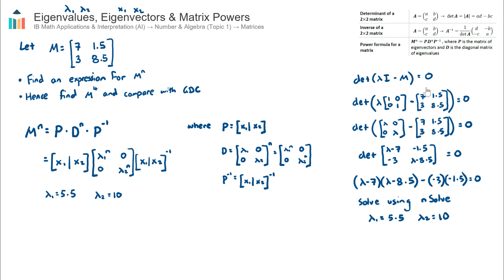The two eigenvalues could also be found by hand using the characteristic equation: the determinant of lambda times the identity matrix minus M equals zero. Going through this process, we end up with a quadratic in terms of lambda, which we can solve by factorizing, using the quadratic formula, or using n-solve. The result lines up with the calculator values: eigenvalue 1 is equal to 5.5 and eigenvalue 2 is equal to 10. We'll substitute these into the eigenvector equation next.